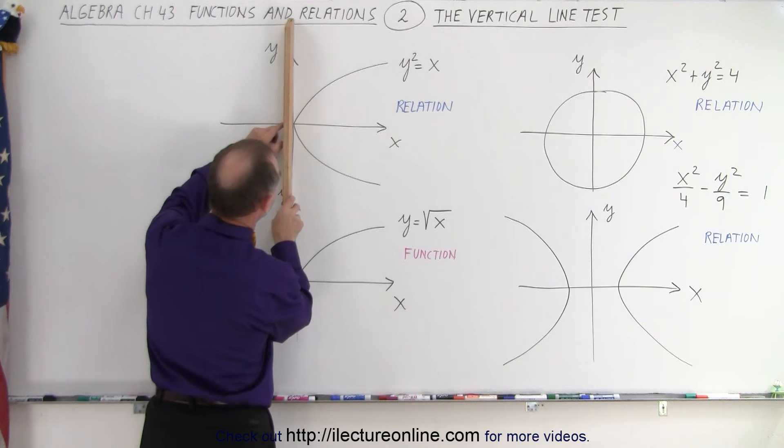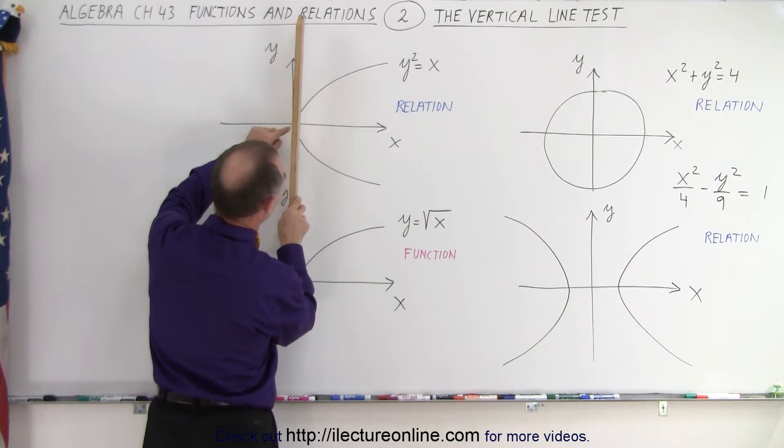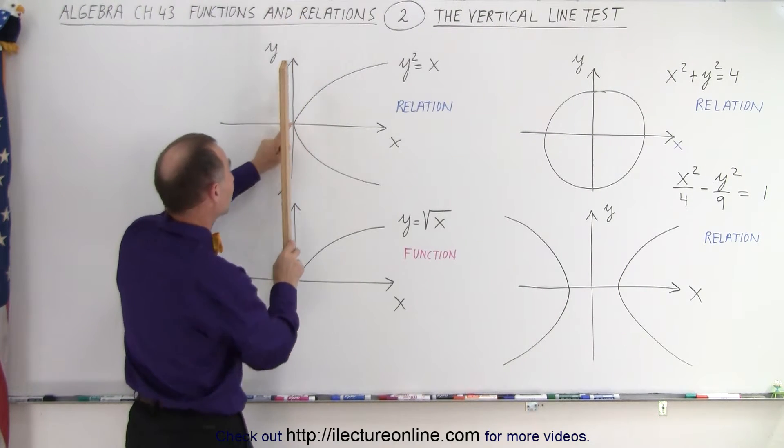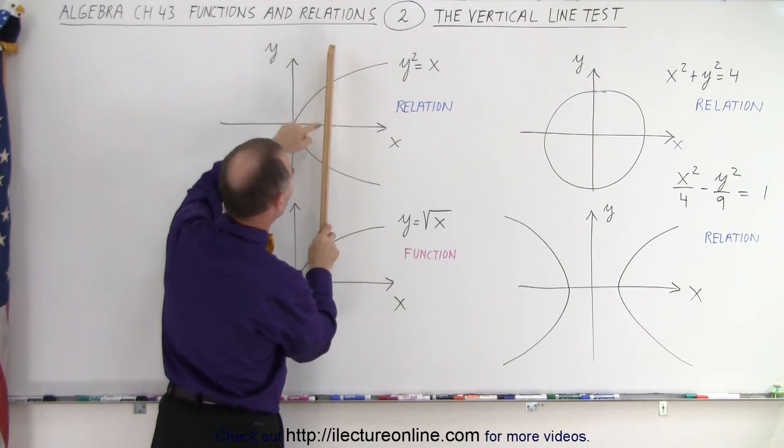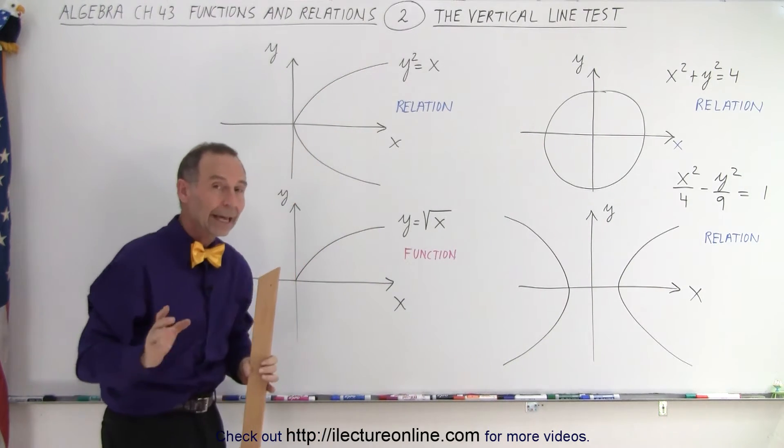Over here as well, you can see that at the very edge, it only touches once. There's one single point there, but once we go to the right of that, we have two places where it crosses the vertical line—again, a relation.